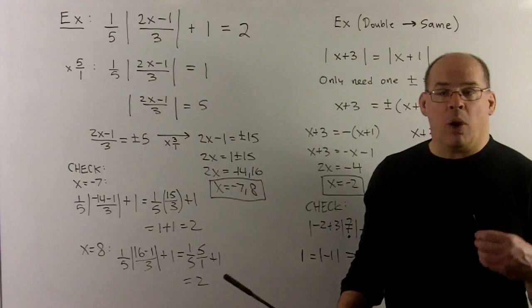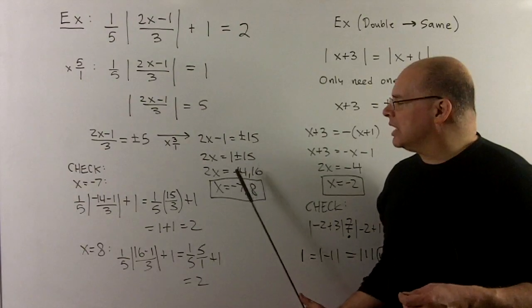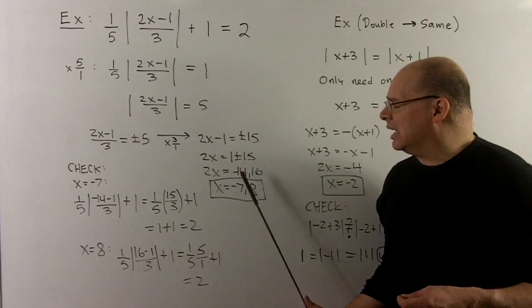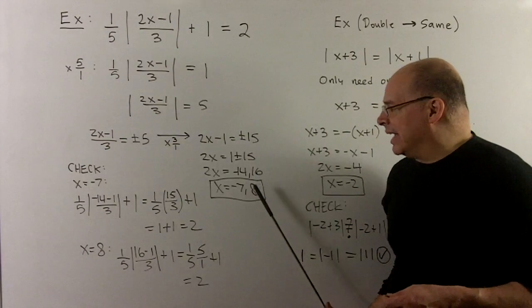We move the 1 over, and then I'm looking at the two equations 2x equal to minus 14 and 2x equal to 16, giving for solutions minus 7 and 8.